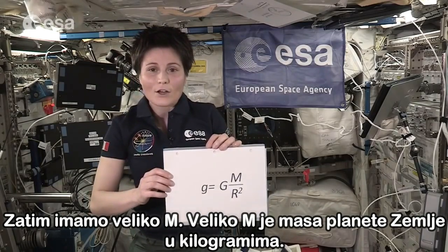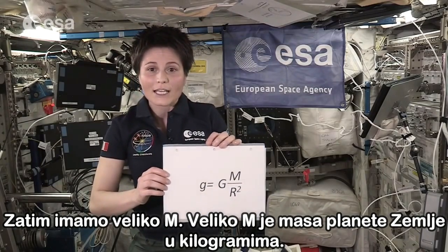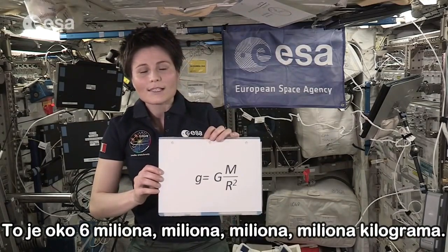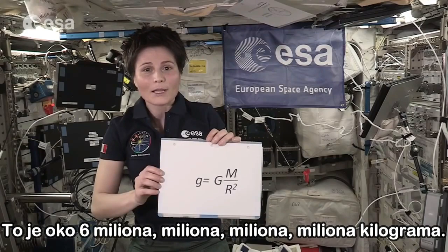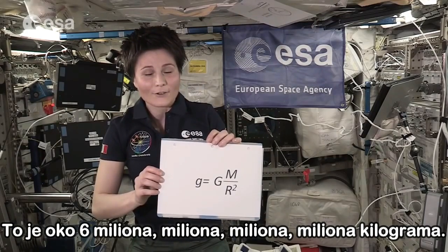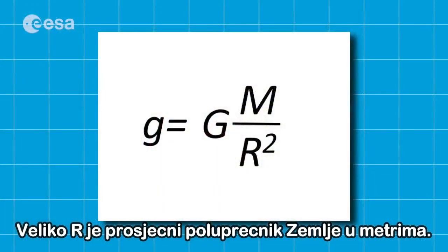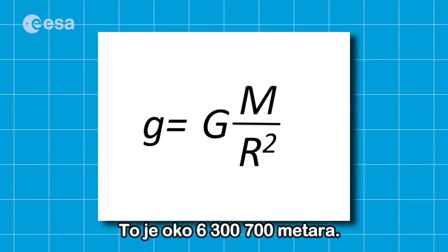Then we have big M. Big M is the mass of the Earth in kilograms, so that would be around 6 million million million million kilograms. And big R is the average radius of the Earth in meters, that is about 6,370,000 meters.